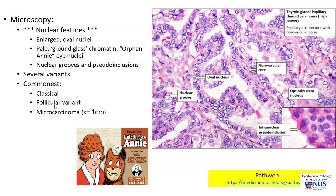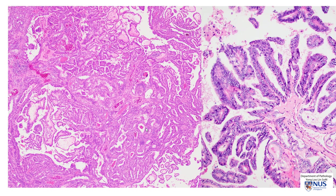There is also a follicular variant, which is composed of follicular structures rather than papillary structures, but still shows the nuclear features of PTC. There is also a common variant, papillary microcarcinoma, which is up to 1 cm in maximal dimension. There are, of course, other variants, but these are the commonest variants.